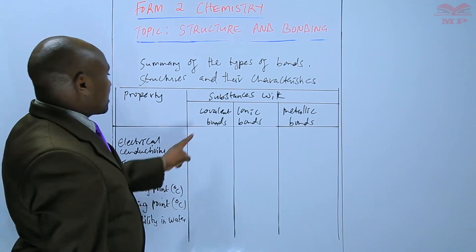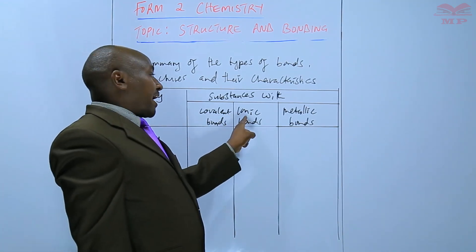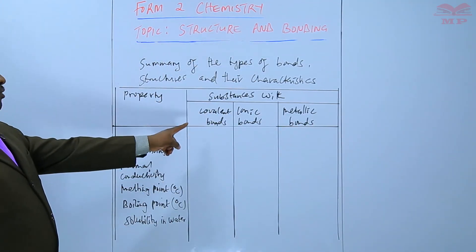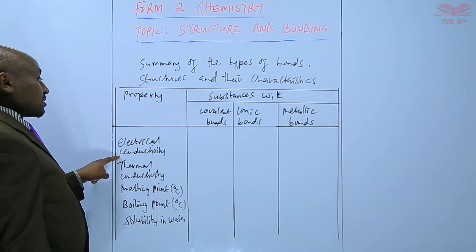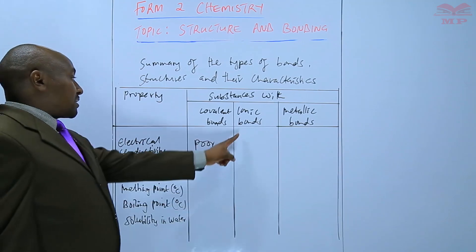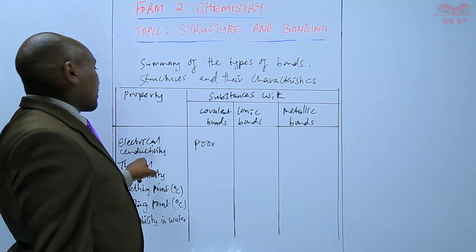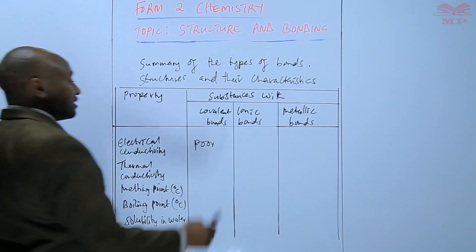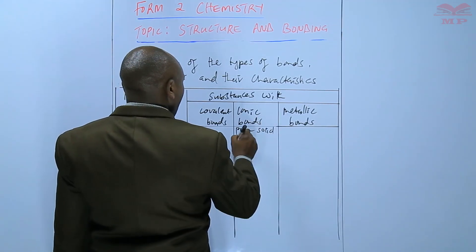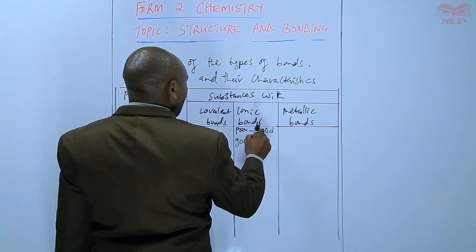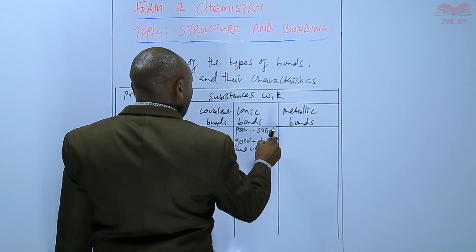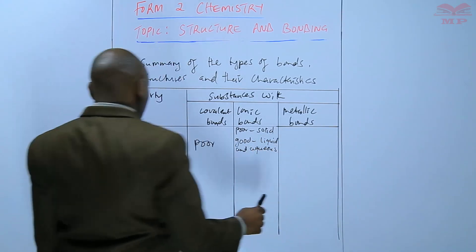So we have the substances with covalent bonds, those with ionic bonds, and those with metallic bonds. In terms of electrical conductivity, covalent substances are poor conductors. Those that have ionic bonds are poor in solid form, but good in liquid and aqueous state.